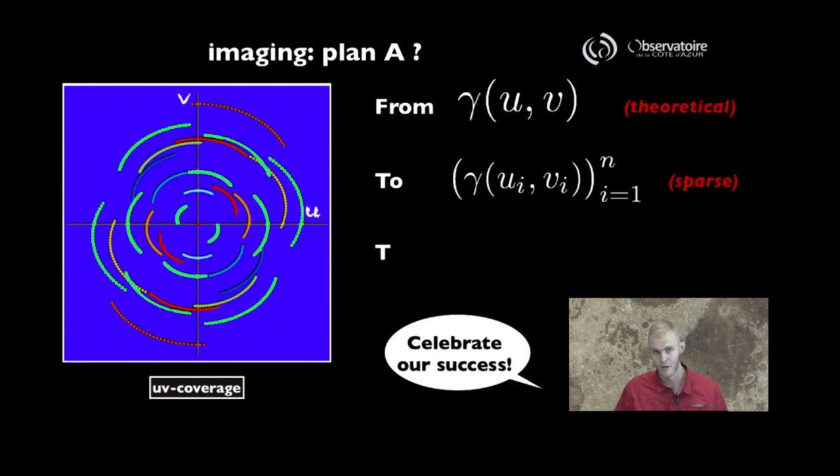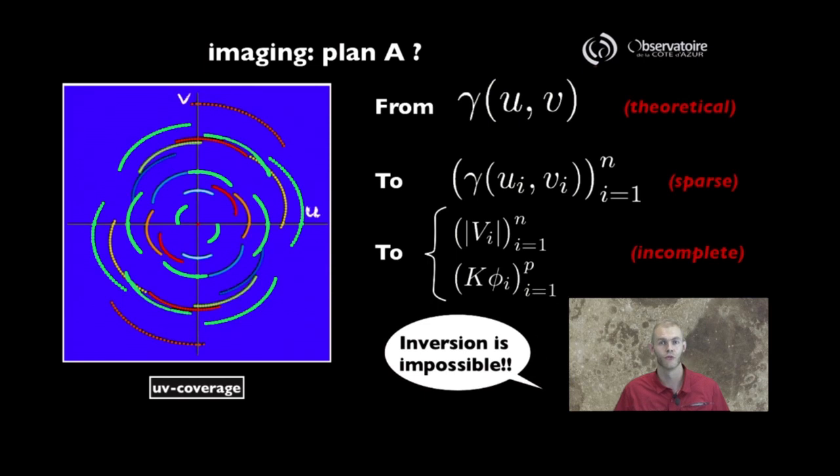And if that were not enough, some of that data is actually missing. In most places, we are indeed able to actually get access to at least the visibility modulus, but we've seen on a couple occasions that we never get access to the phase, which means that 50% of the information is gone, unless we rely on tricks like differential phases or closure phases that we've seen before, in which case we get access to a partial amount of that phase information. That's unfortunately not sufficient in order to simply rely to directly invert that relation and go back to producing an image of our target.